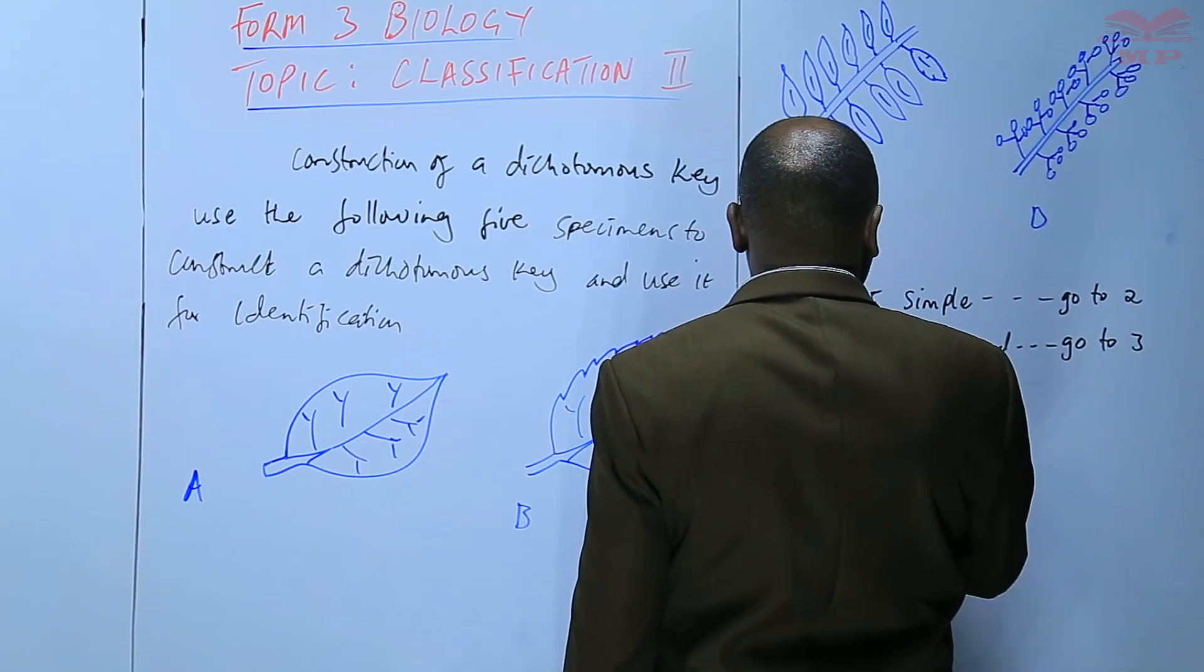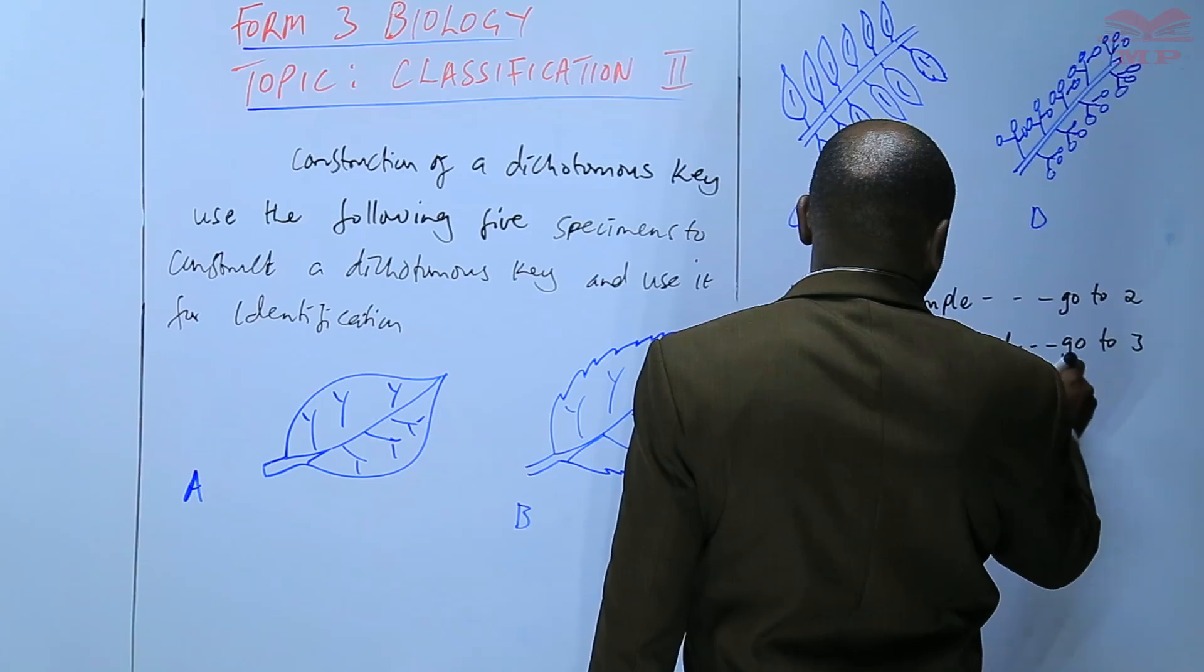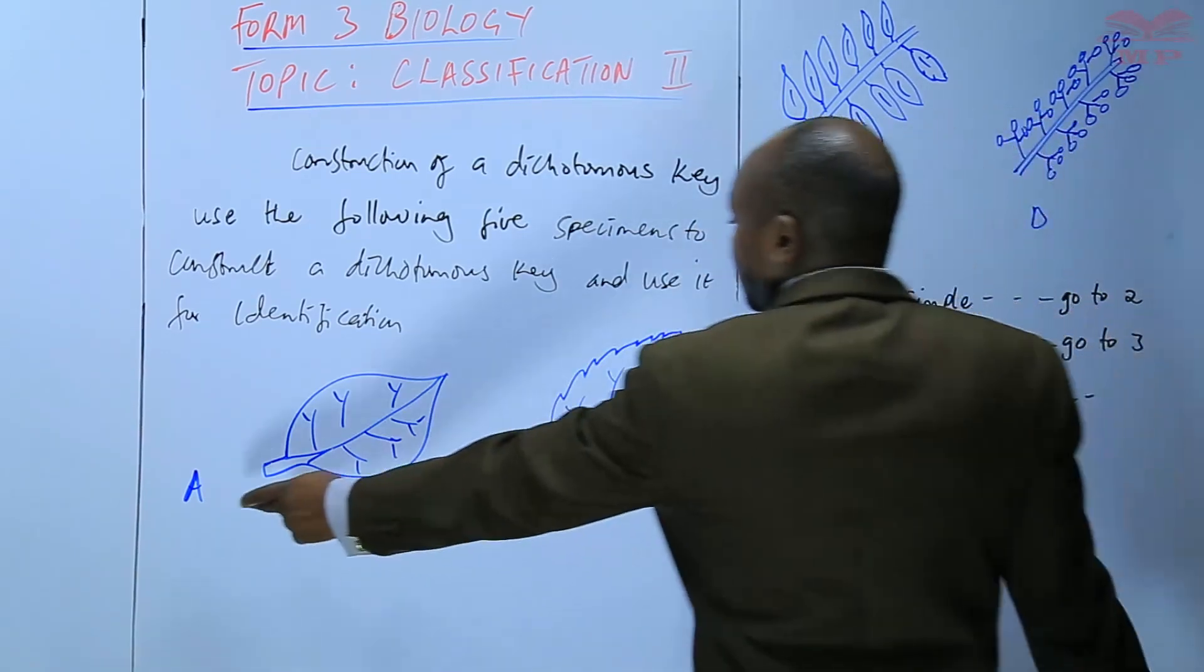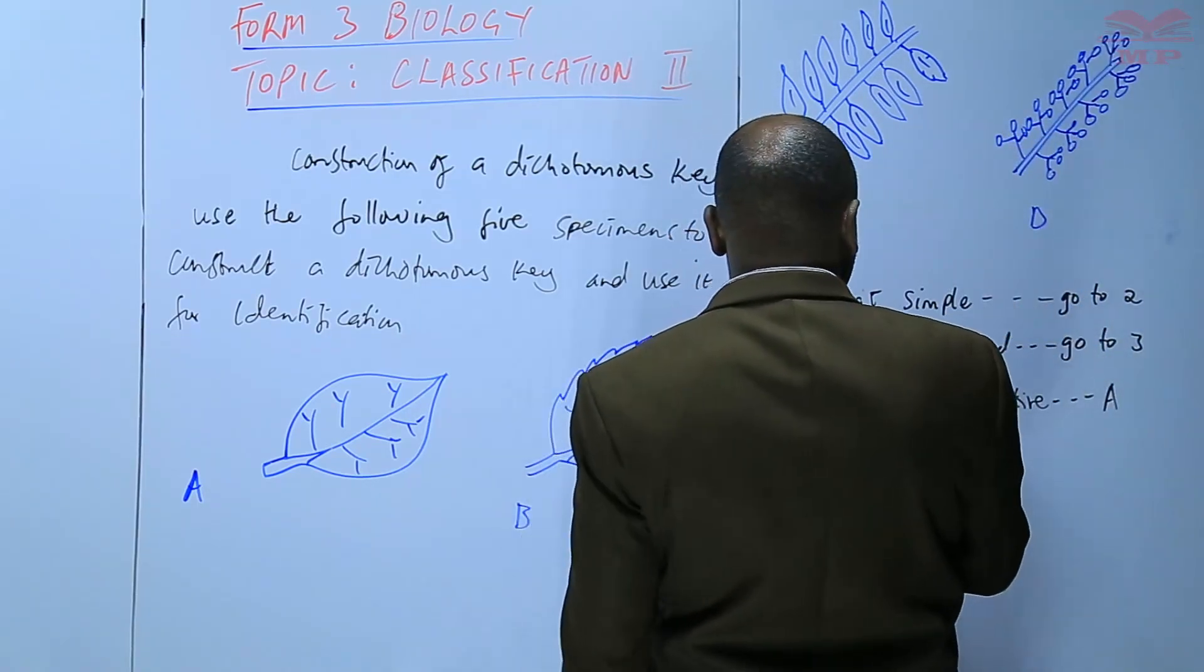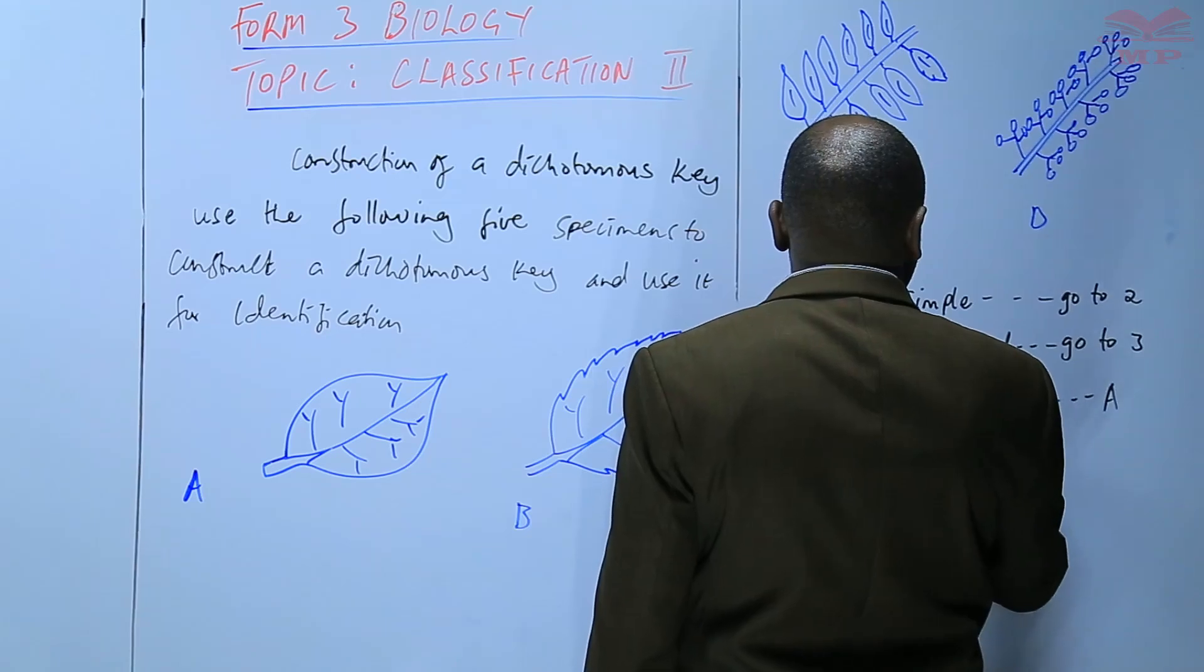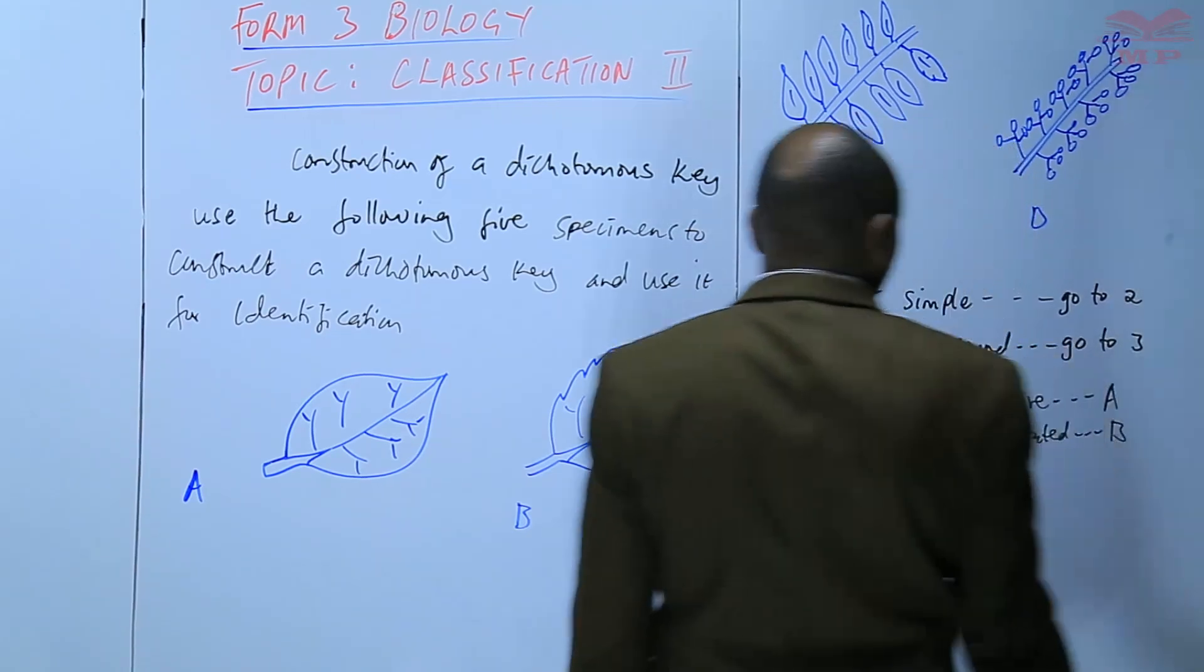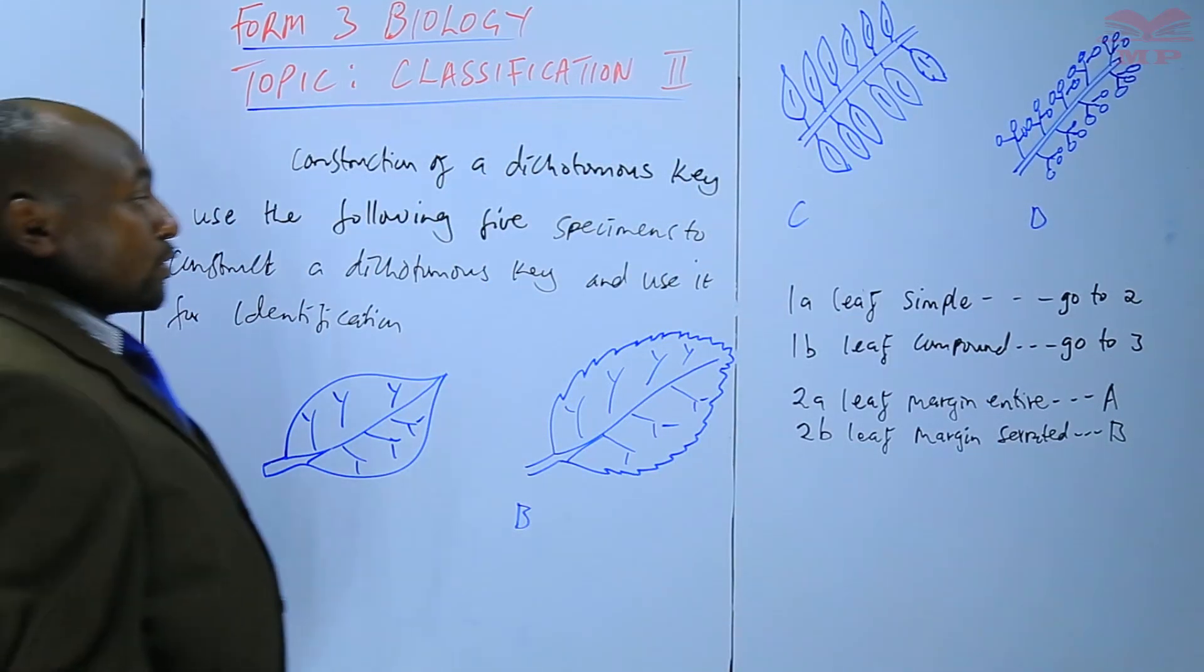You are using identical forms of words, and that points at specimen A. And then leaf margin serrated points at B. We have already identified A and B.